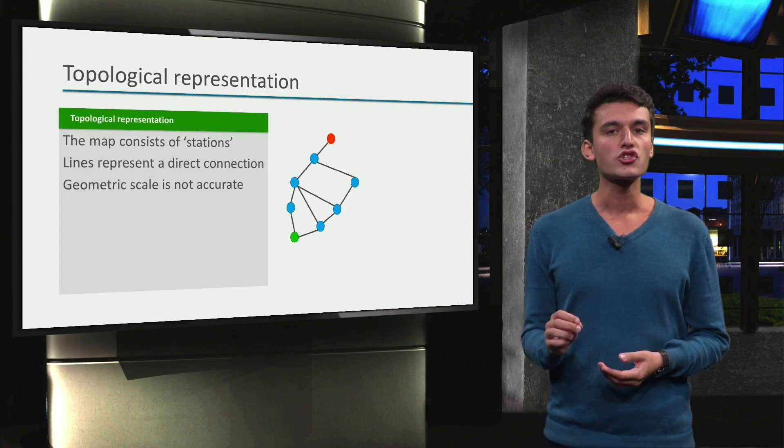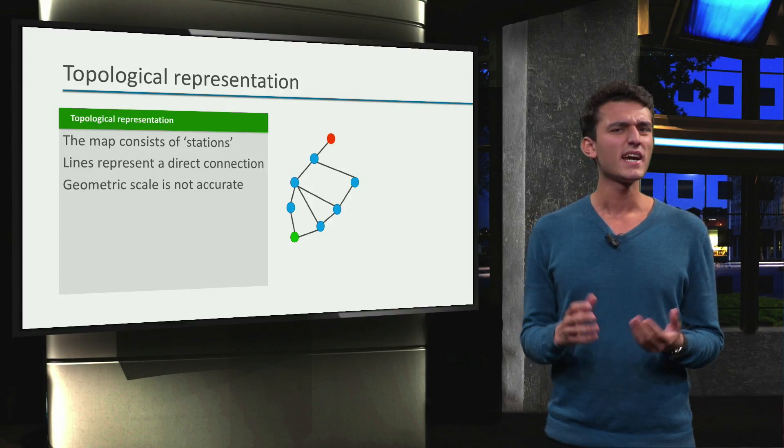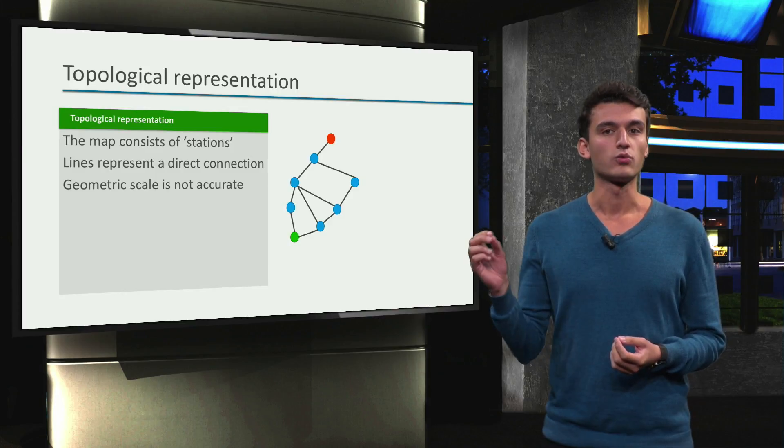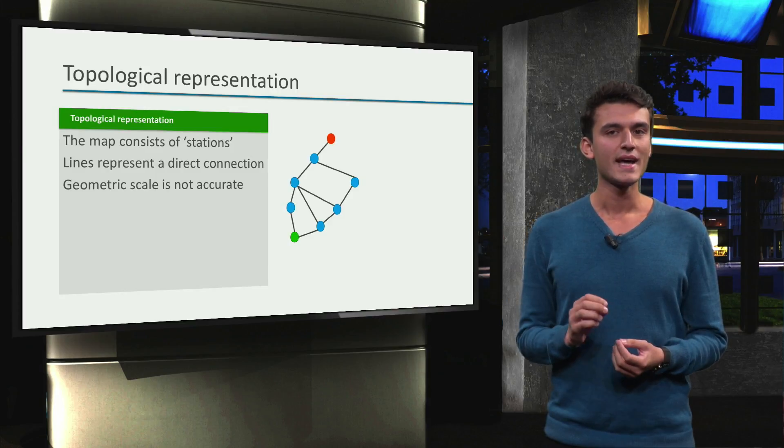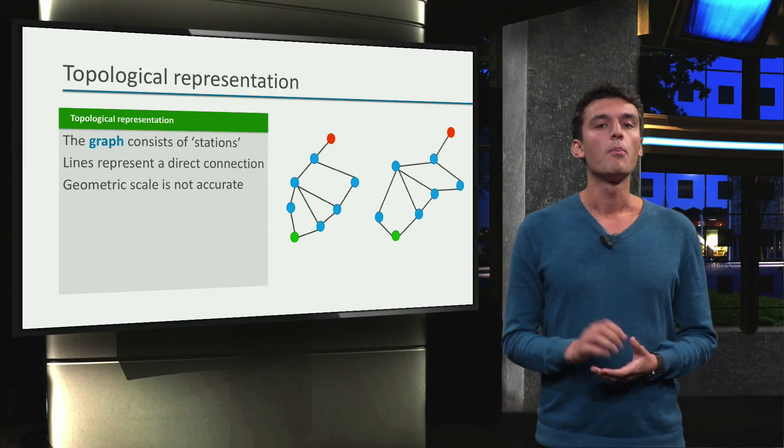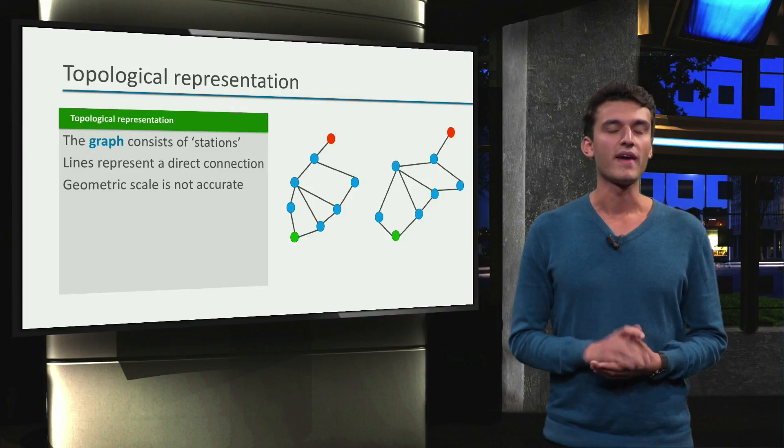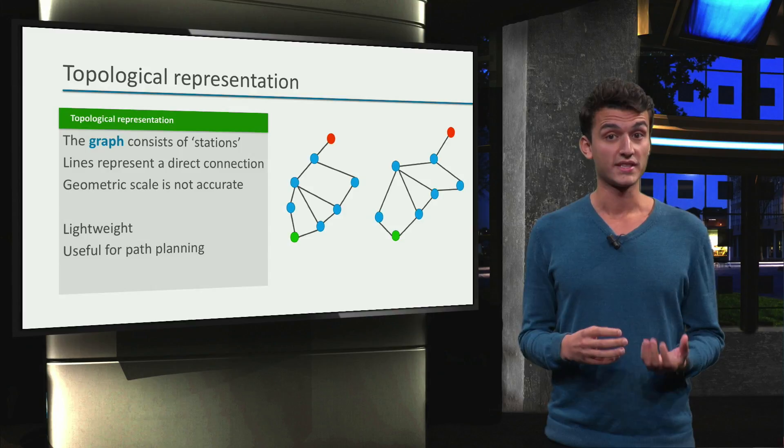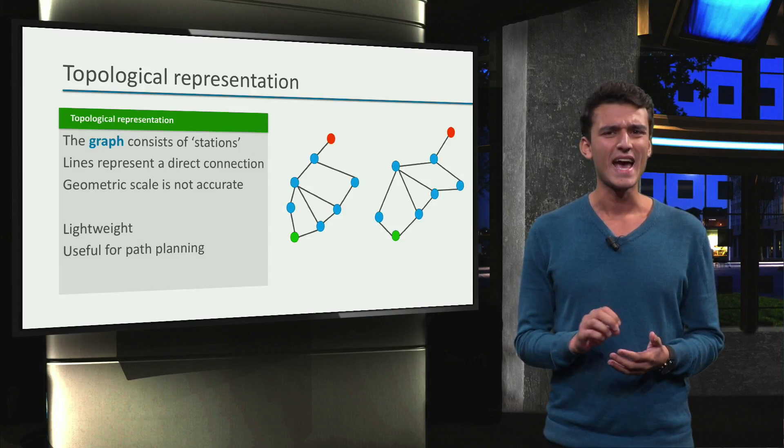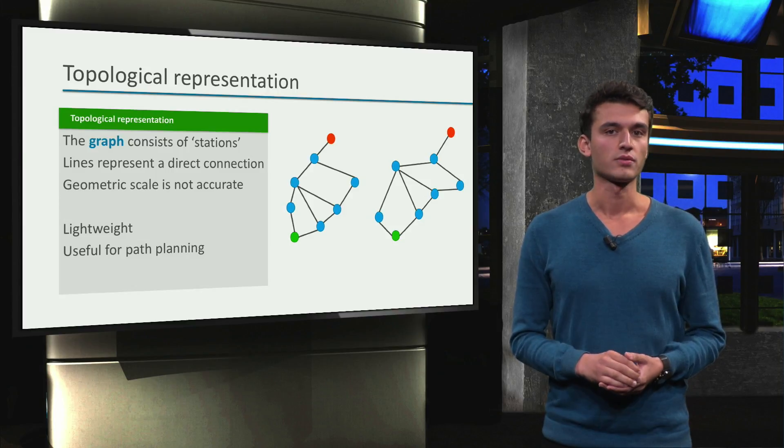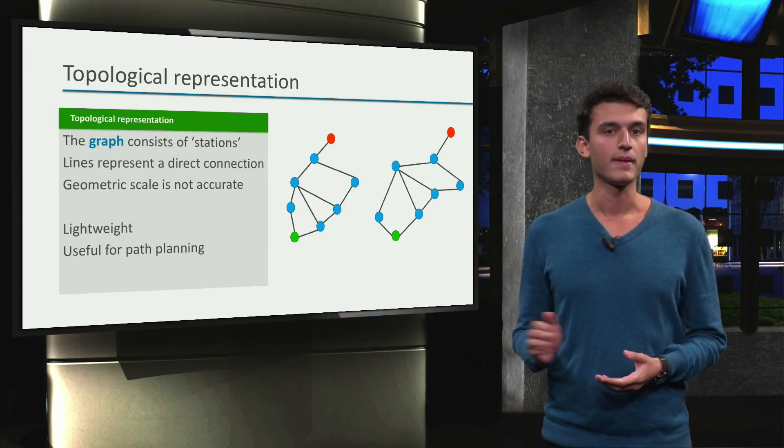This is called a topological representation. It's basically a graph. I start at the green station and I want to go to the red one. The geometric scale does not need to be accurate. I could have also drawn it like this. Both representations are equally valid. Because we don't need to worry about scale and where each station exactly is, this representation is lightweight. It doesn't need much space to be stored. It's also useful for path planning.